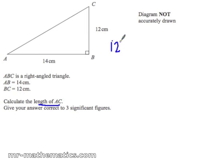Where 12 squared plus 14 squared will equal the hypotenuse squared, and the hypotenuse side is opposite the right angle.